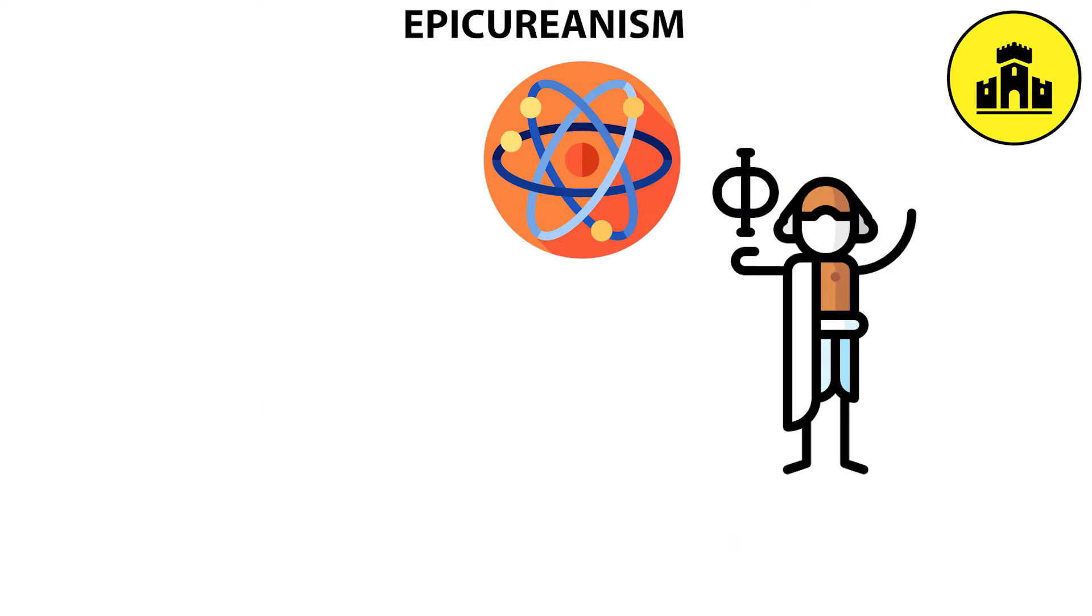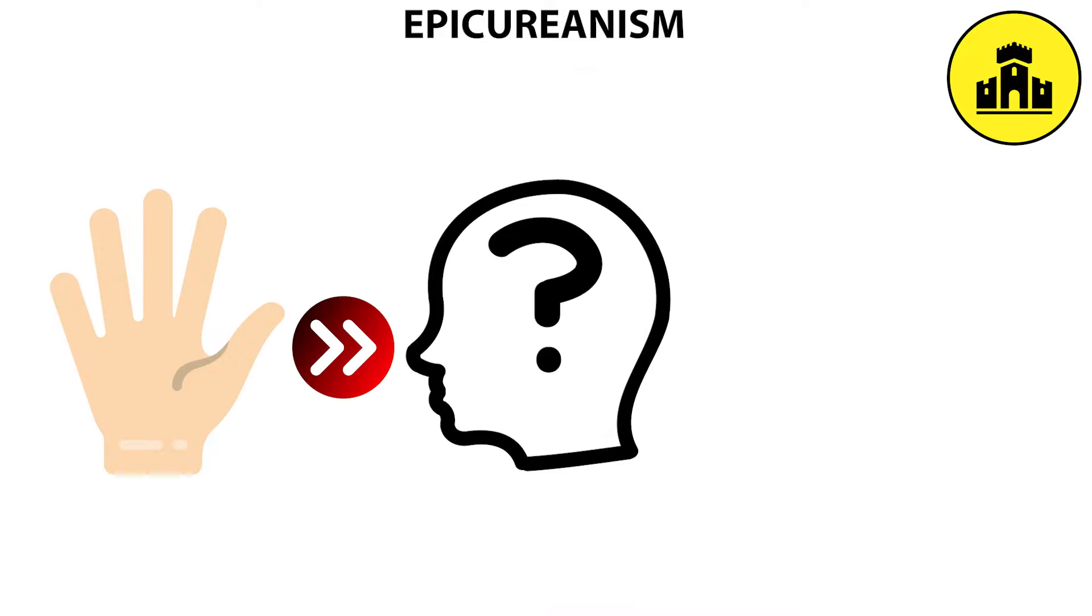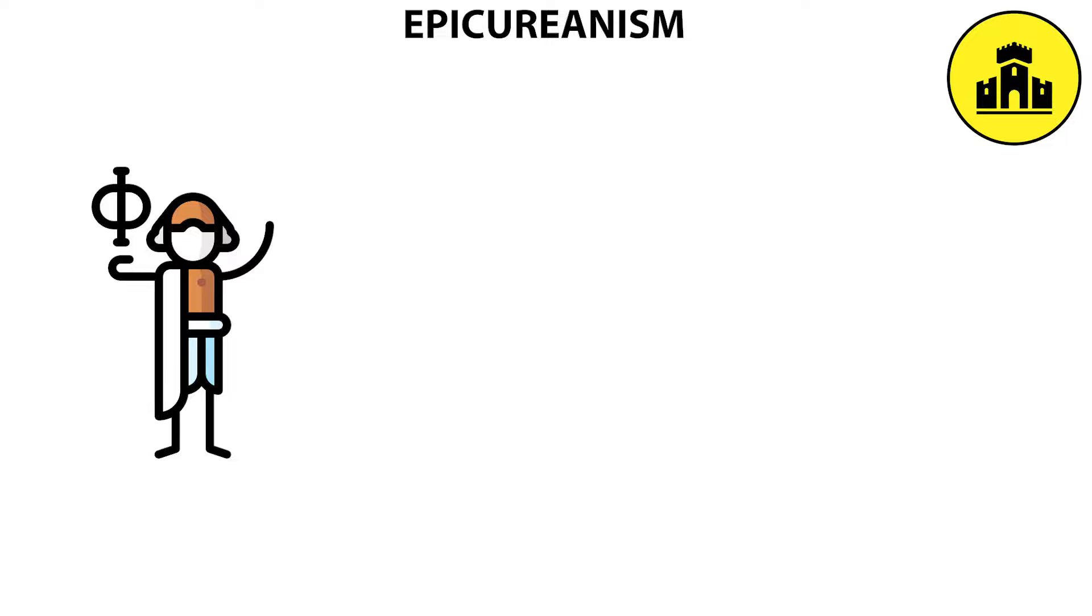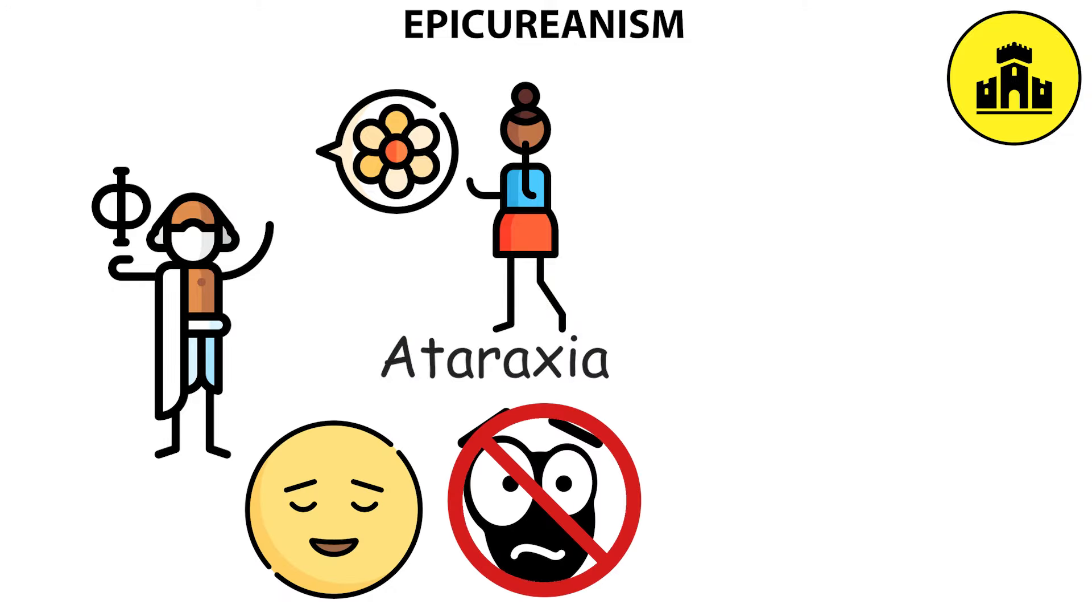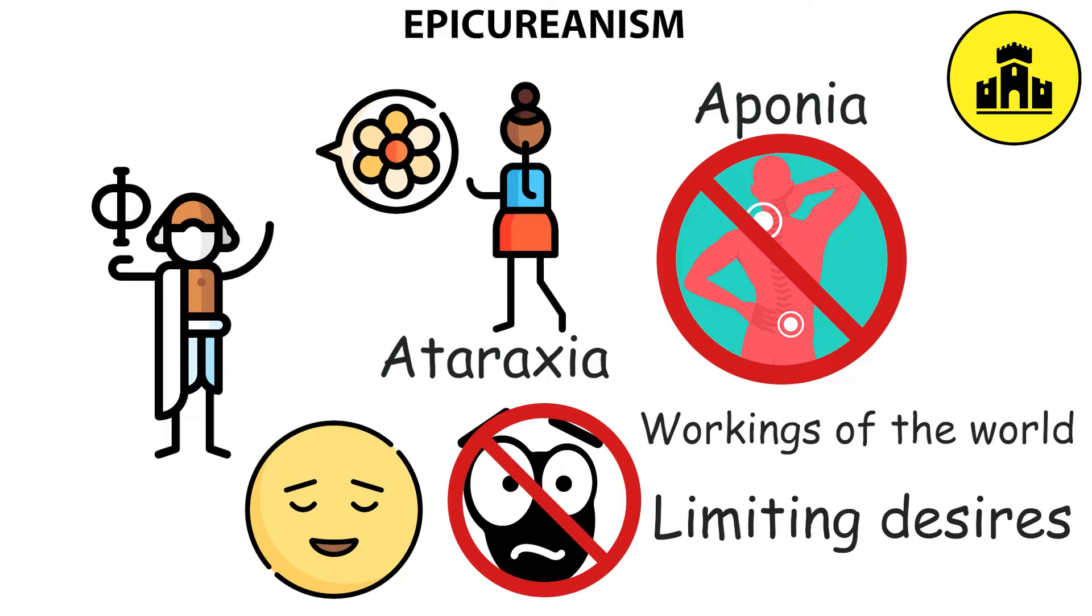Epicurus was an atomist and materialist, following in the steps of Democritus. His materialism led him to religious skepticism and a general attack on superstition and divine intervention. Epicurus believed that the greatest good was to seek modest, sustainable pleasure in the form of a state of ataraxia, tranquility and freedom from fear, and aponia, the absence of bodily pain, through knowledge of the workings of the world and limiting desires.